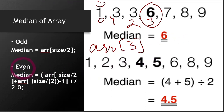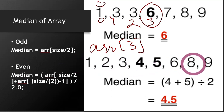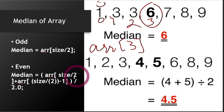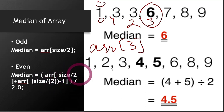Now let's do this for an even number of elements. Let's take this example: one, two, three, four, five, six, seven, and eight. We have eight values and eight is an even number. What we will do is divide the size by two, and then also compute size divided by two minus one. So eight divided by two equals four, and four minus one gives you three.